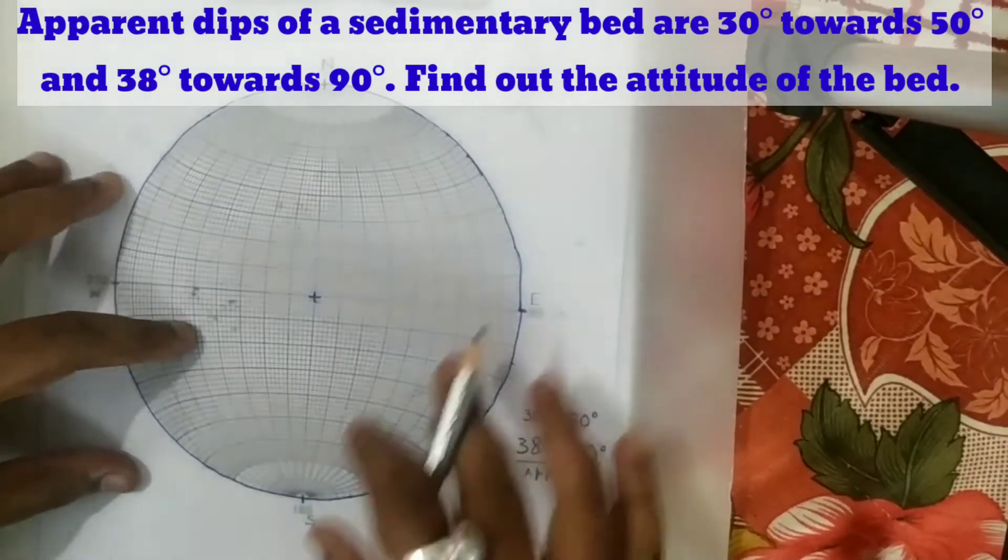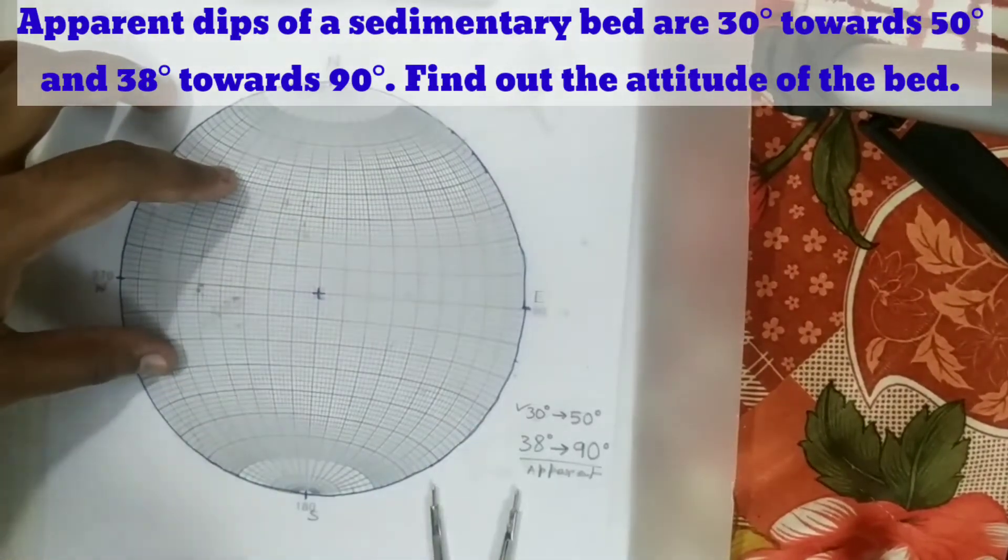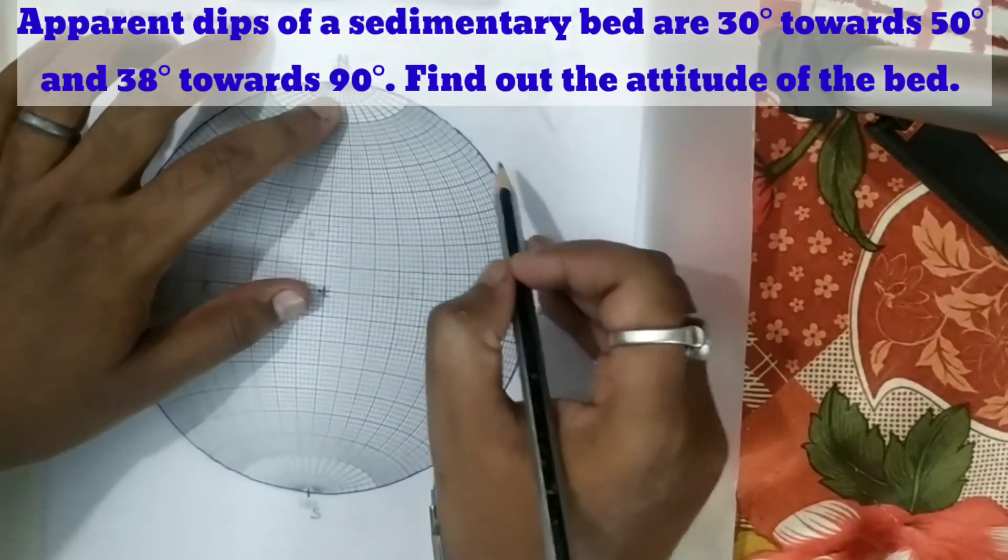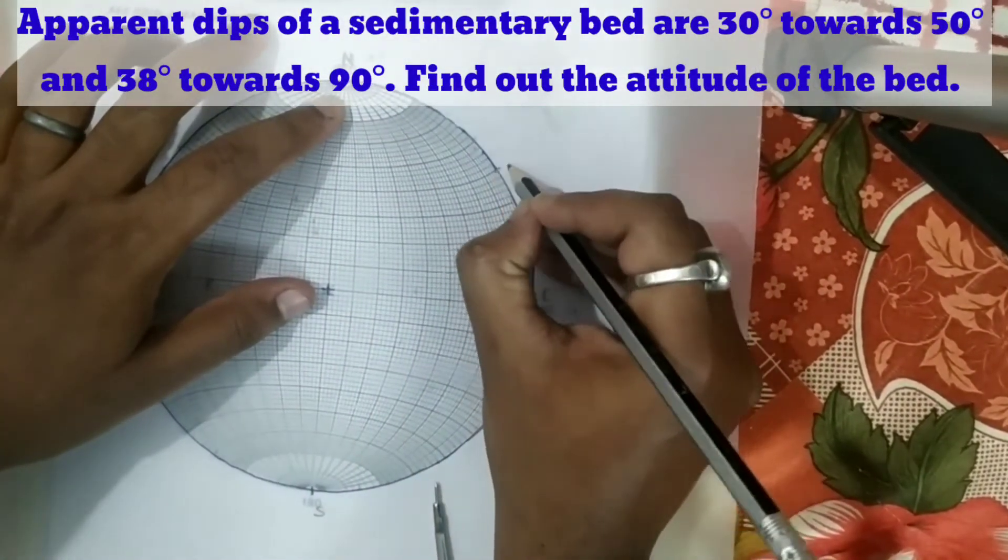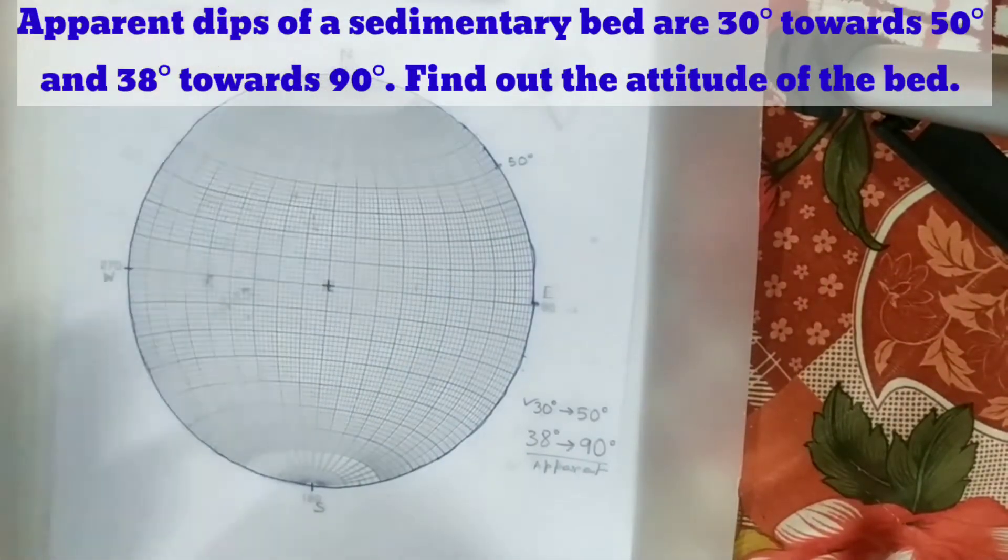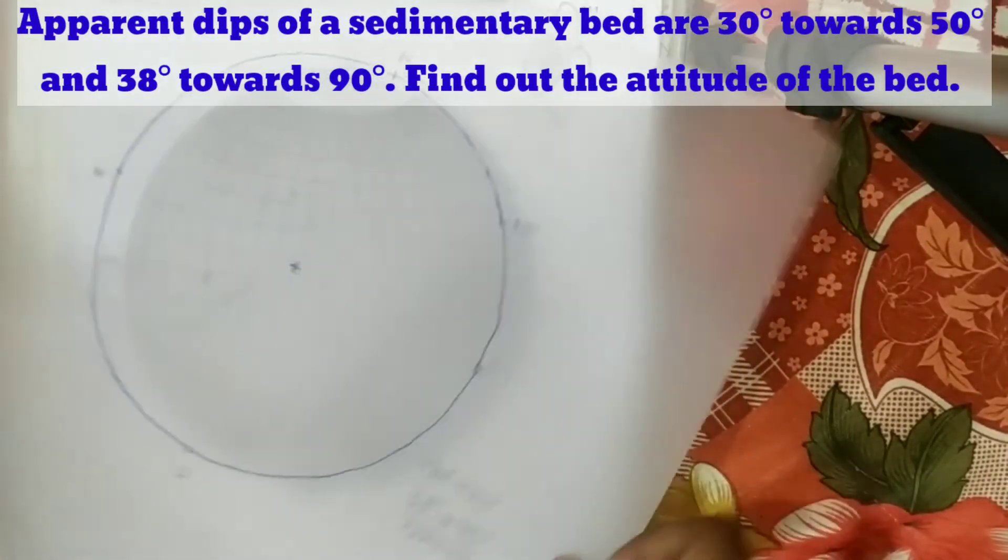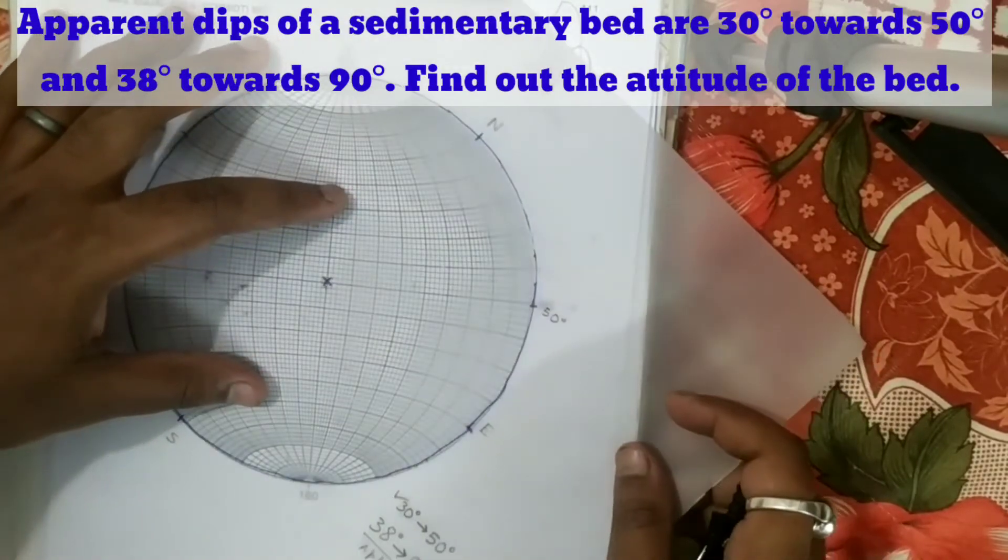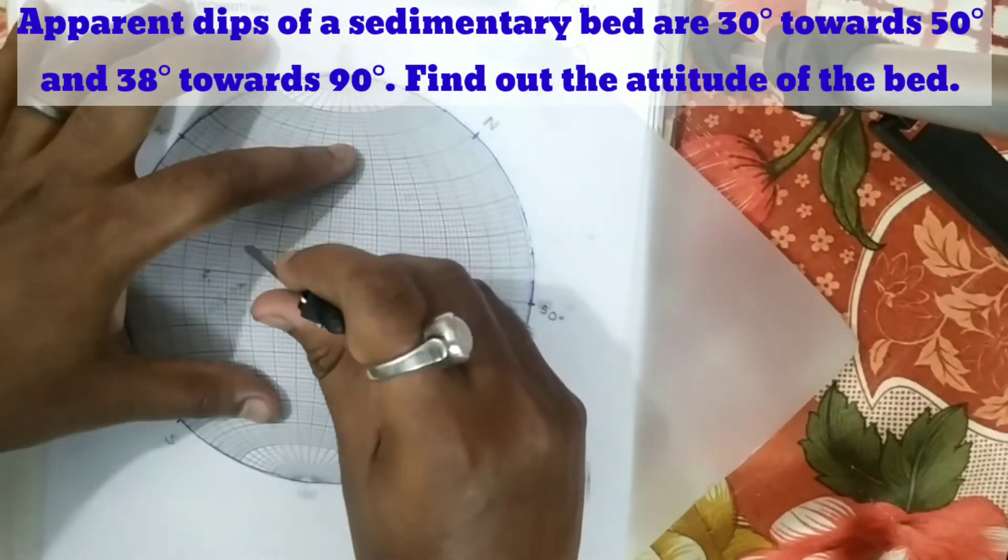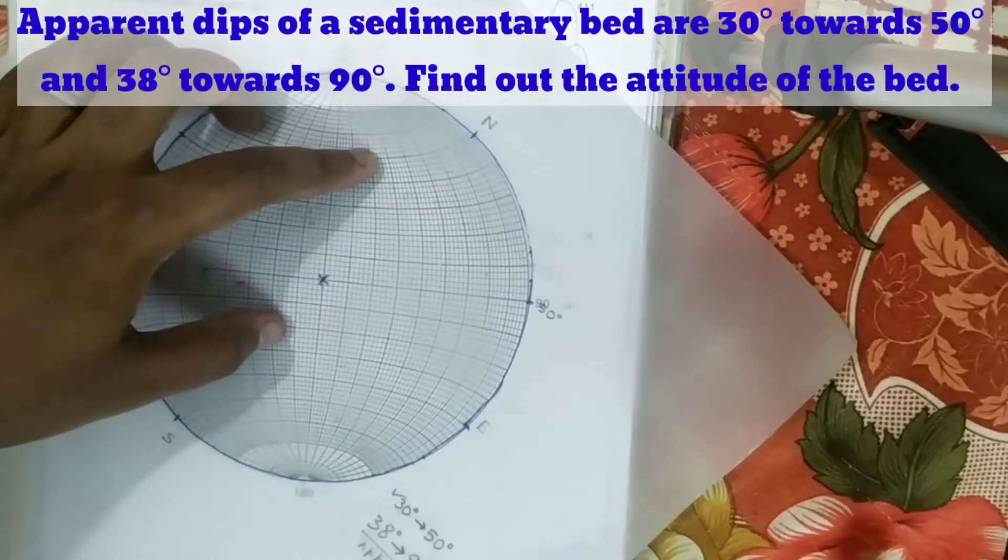So 50 degrees - we have to mark the first data. 50 degrees: this is 10, 20, 30, 40, 50. So this is 50 degrees. We have to make it in such a way that this is now 50 degrees on the east-west line.